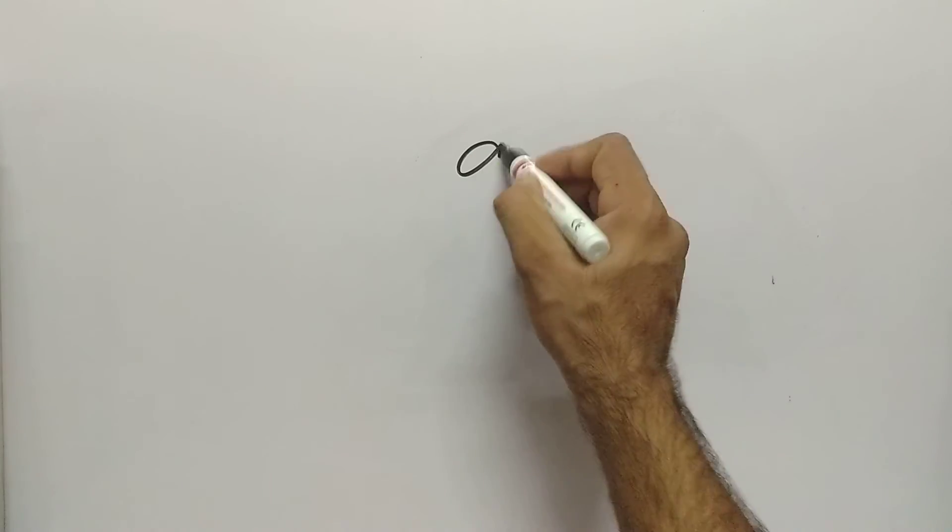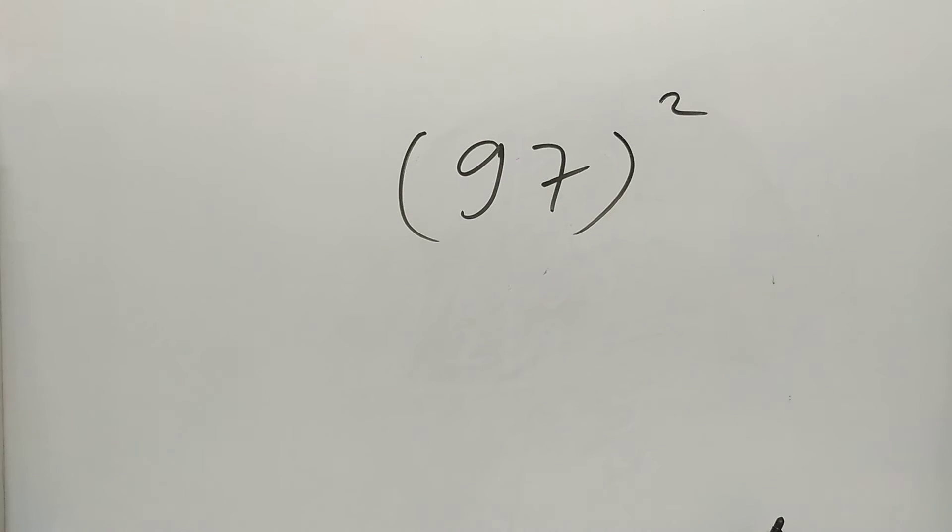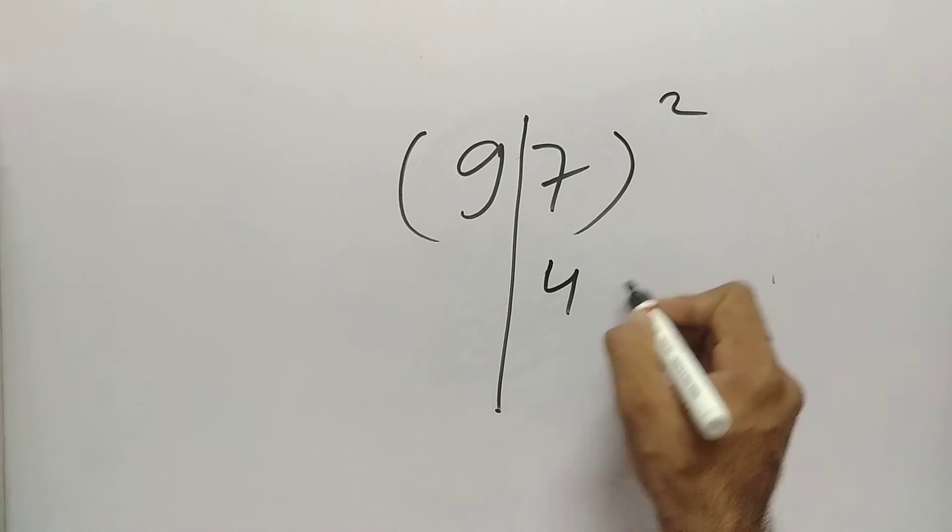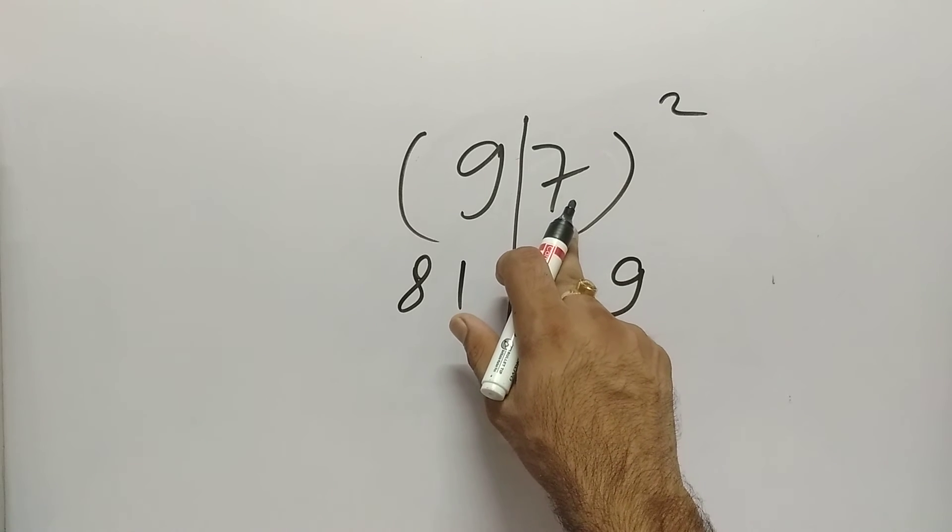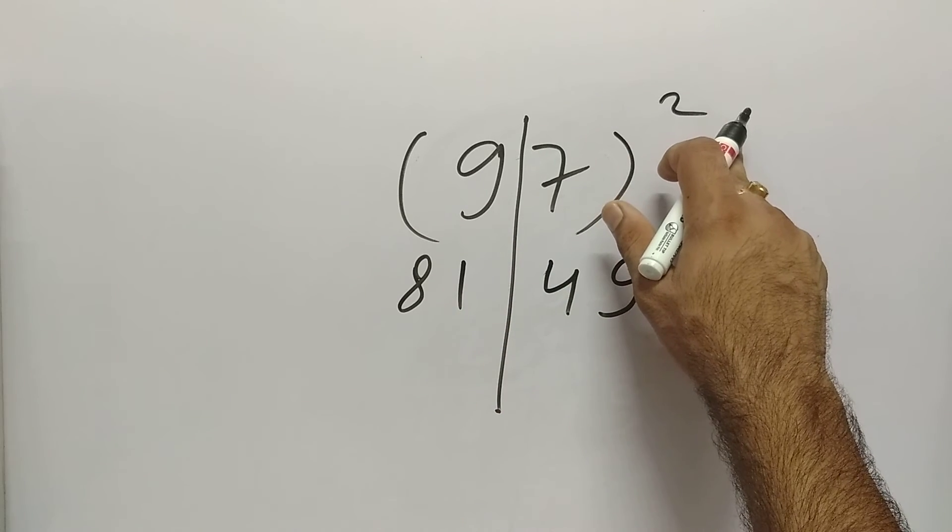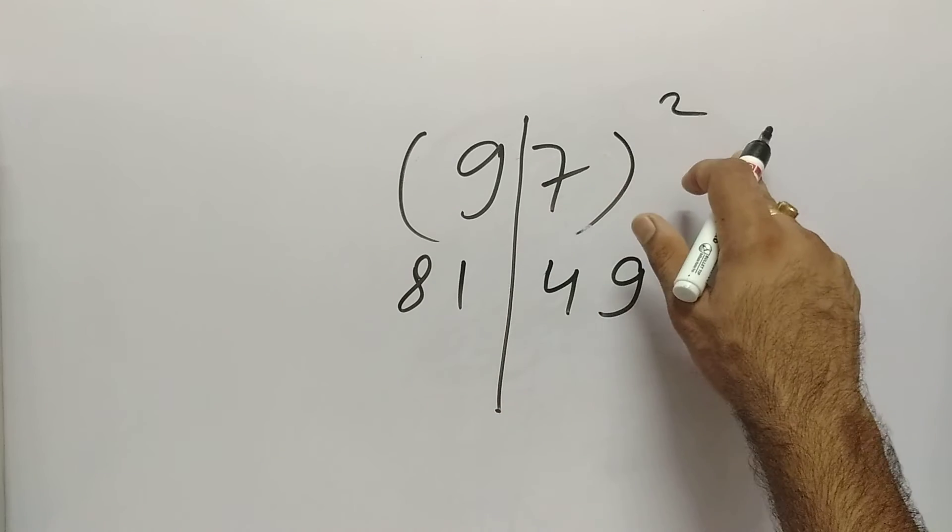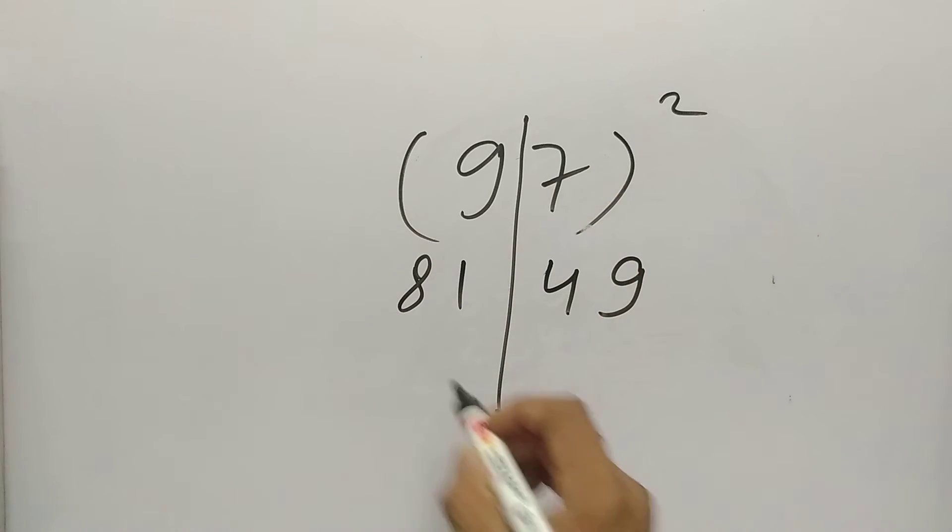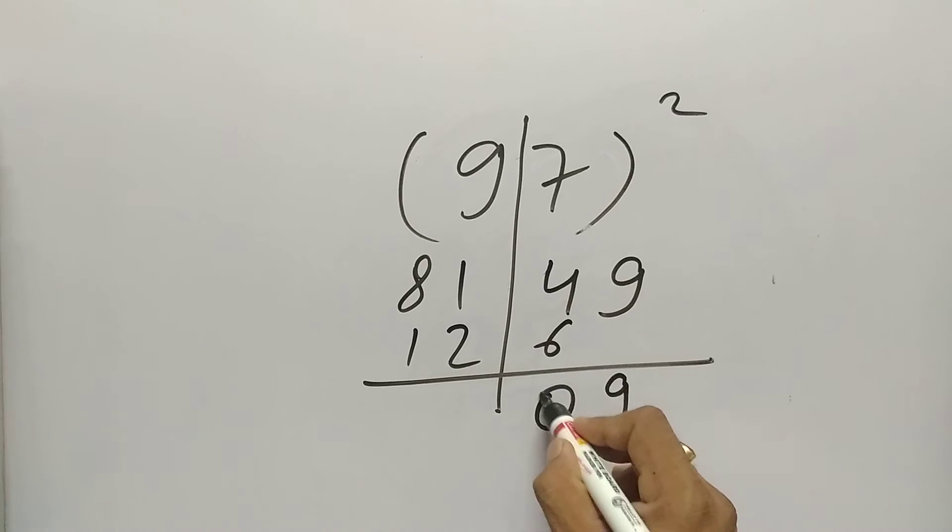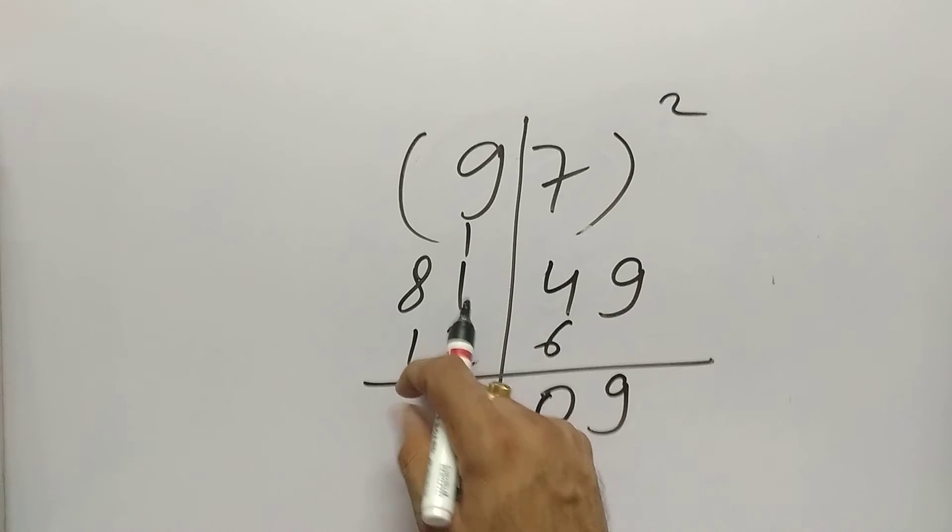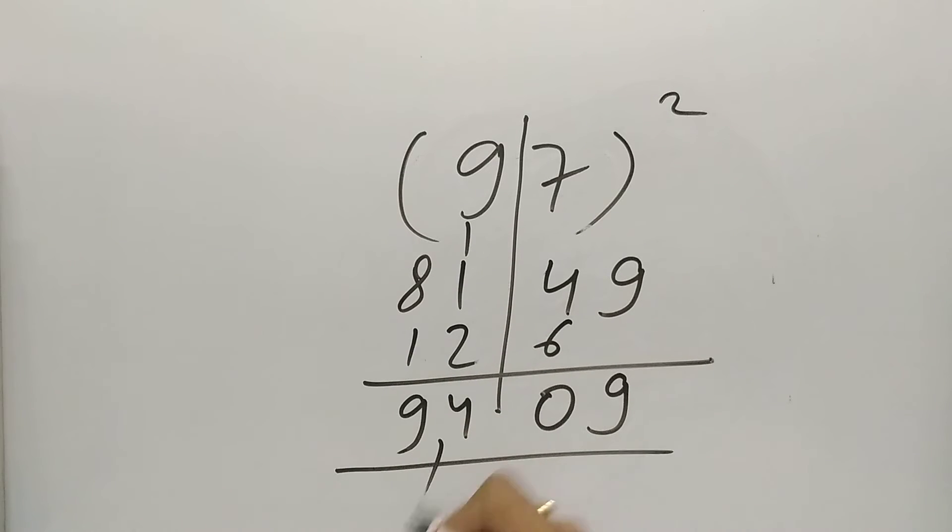Let's take one more example. Suppose the number is 97 square. What we are going to do? Make a line. 7 square 49, 9 square 81, 9 times 7 is 63, 63 times 2. What will be 63 times 2? That will be 126. So we will put 126 over here. 9, 10, 234, 8 plus 1 is 9. So answer is 9,409.